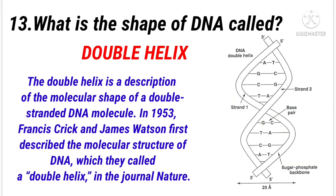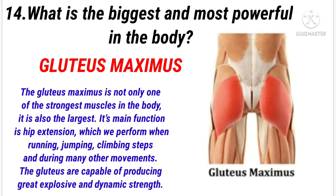What is the shape of DNA called? Answer: Double helix. What is the biggest and most powerful muscle in the body? Answer: Gluteus maximus.